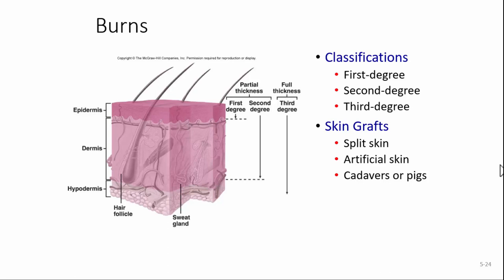There are three classifications of burns. First-degree burns are partial thickness burns affecting only the epidermis — stick your hand under hot water, your hand is red and hurts a little bit, but within a few minutes the redness is gone. Second-degree burns reach down into the dermis — think of blisters. A blister is a second-degree burn, and it's still a partial thickness burn.